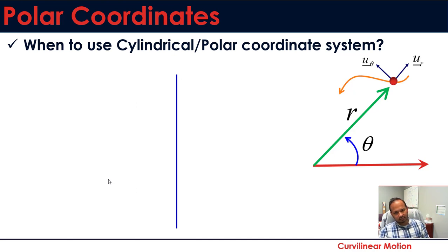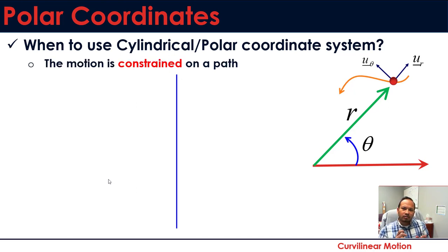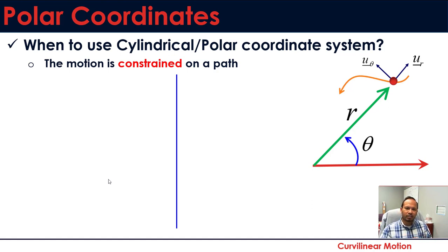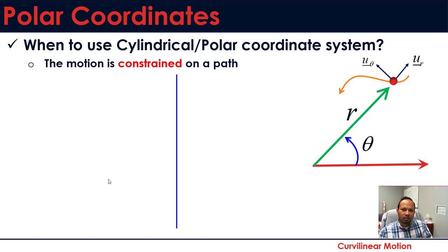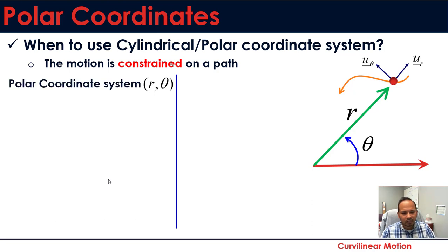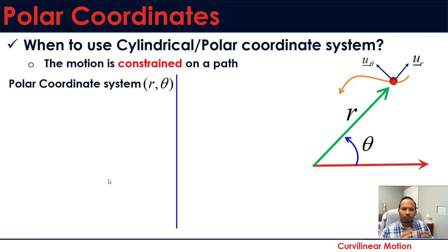You should use the cylindrical or polar coordinate system when the motion of a particle is constrained on a path. Once you've decided this problem belongs to kinematics of a particle and you can use polar or cylindrical coordinates, you need to know what set of equations to use. If your problem is 2D on a plane, use the polar coordinate system.